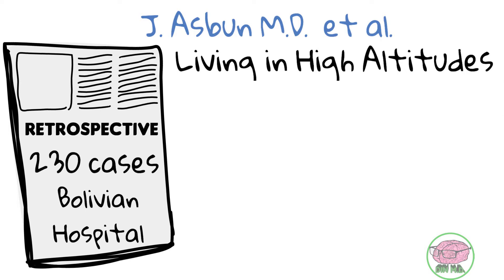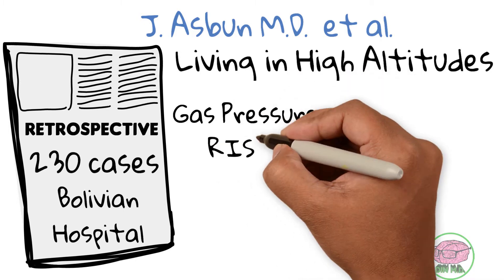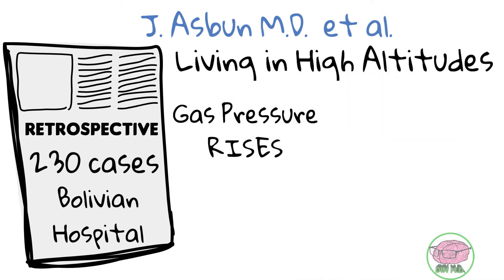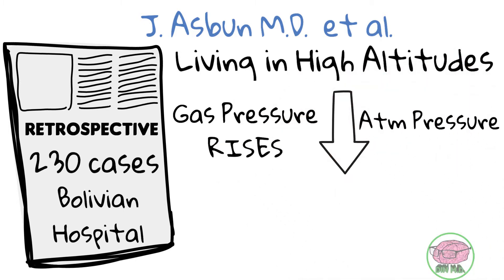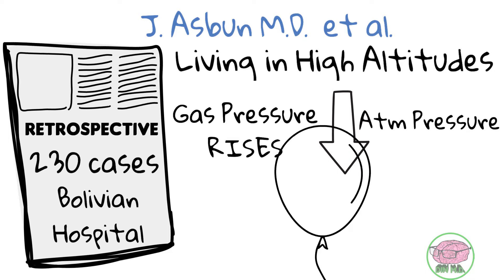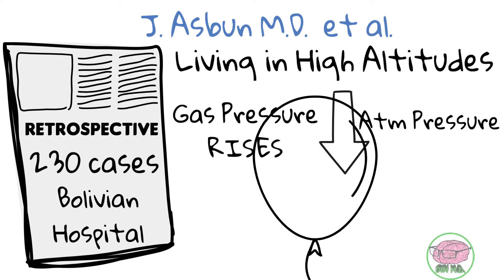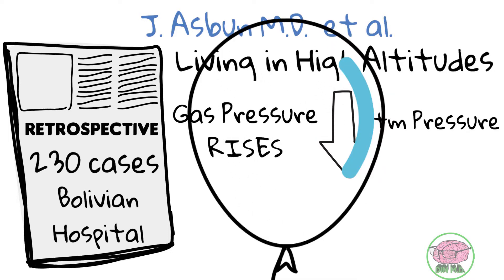One explanation is that gas pressure rises when there is a decrease in atmospheric pressure, as happens at high altitudes. Therefore, the gas inside the bowel expands and pressure increases, causing elongation and dilation of the sigmoid colon.